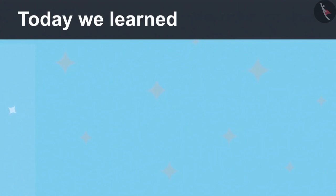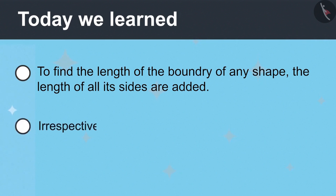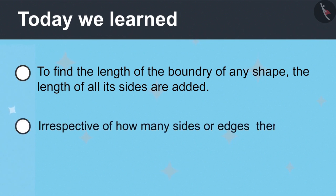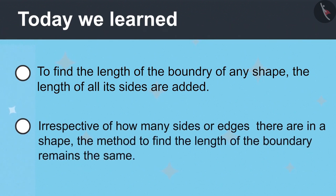Today we have learned that to find the length of the boundary of any shape, the length of all its sides are added. And irrespective of how many sides or edges there are in a shape, the method to find the length of the boundary remains the same.